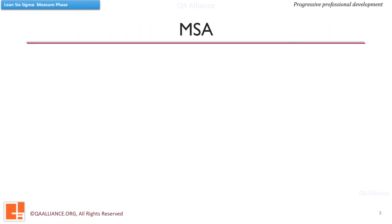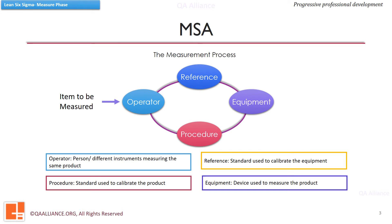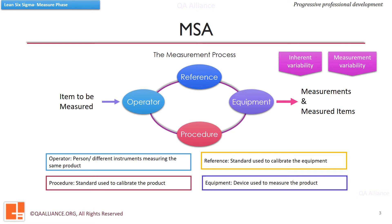Let us see a typical measurement process. We take the item to be measured as input; it goes to the operator, which may be a person or an instrument, with the help of measuring equipment, reference, and procedures. The item is measured, and the output of this measurement process comes in the form of a measured value. When we collect measurements of all the items in a batch, the measured values have some inherent variation, as well as measurement variation induced by the measurement system due to operators and equipment used.